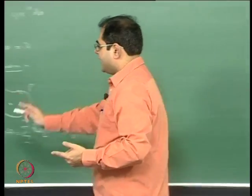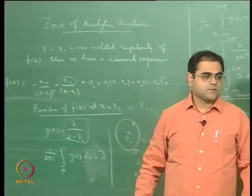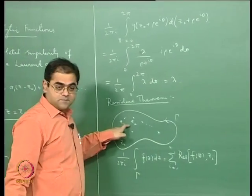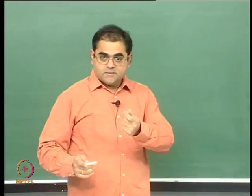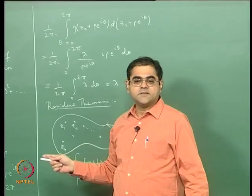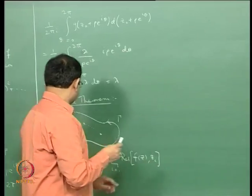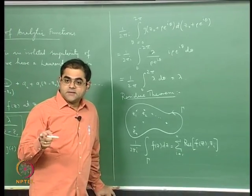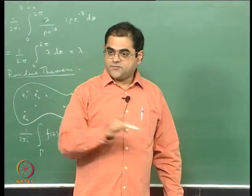So if you integrate term by term, the only thing you pick up is a_{-1}, and that is the proof of the residue theorem for a single singularity. If you have several singularities, this follows from an application of Cauchy's theorem — Cauchy's theorem tells you that if you take an analytic function and integrate it over a simple closed curve, the integral is zero.